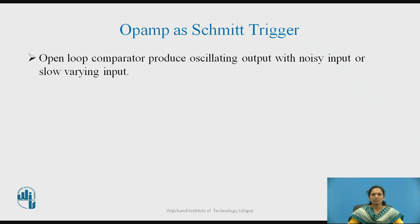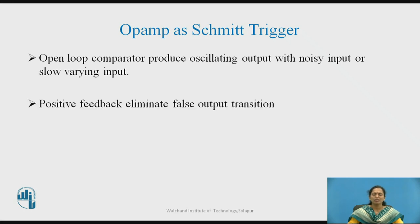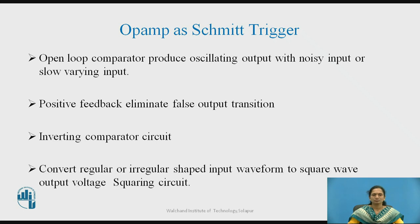To overcome this disadvantage, positive feedback can be used and we can obtain the output without any error. Schmitt Trigger is nothing but an inverting comparator circuit, as we are applying the input signal to the inverting terminal of the operational amplifier. It converts any regular or irregular shaped input waveform into a square wave output voltage. Therefore, it is also called a squaring circuit.